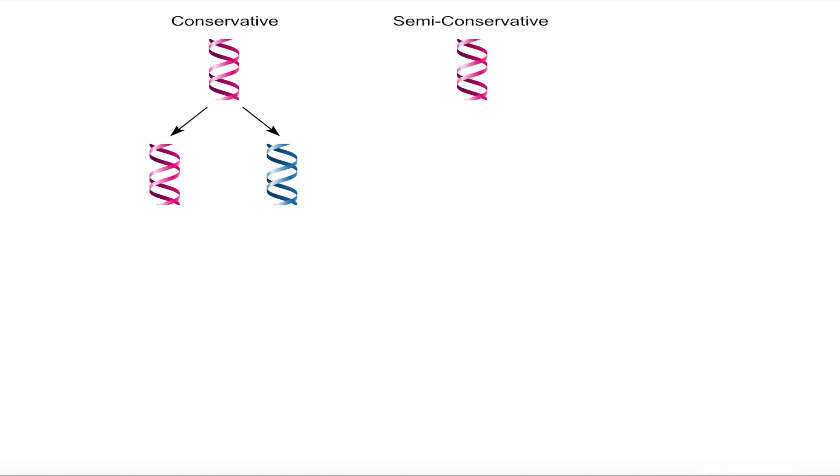In the semi-conservative model, the two parental DNA strands separate and each of those strands then serves as a template for the synthesis of a new DNA strand. The result is two DNA double helices, both of which consist of one parental and one new strand.